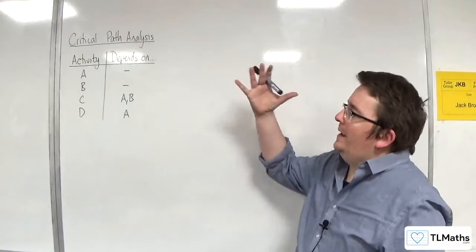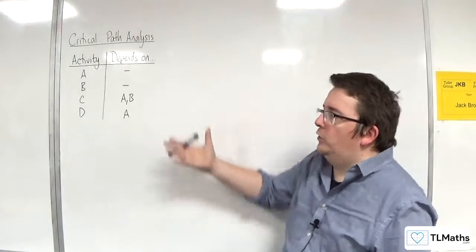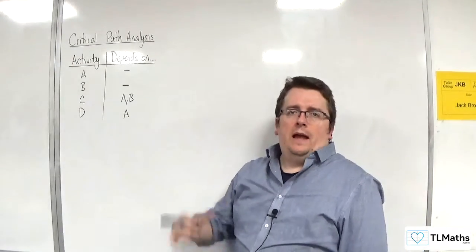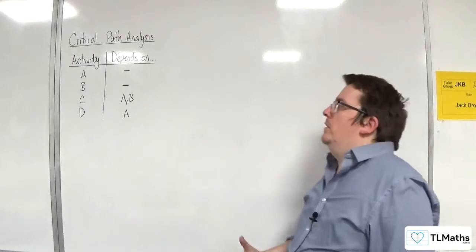In this video, we're going to take a look at this very basic looking precedence table, and we're going to try and draw the activity network for this.